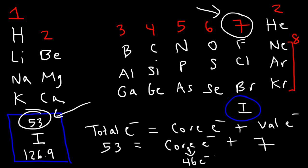Because 46 plus 7 is 53, that's an efficient way to find the number of core electrons for a large element. You don't want to draw it out or write out the full electron configuration — that takes time. Just identify the atomic number and the group number, subtract those two, and that gives you the number of core electrons.